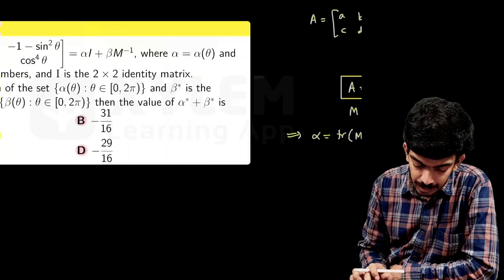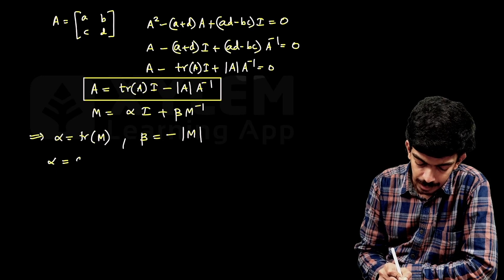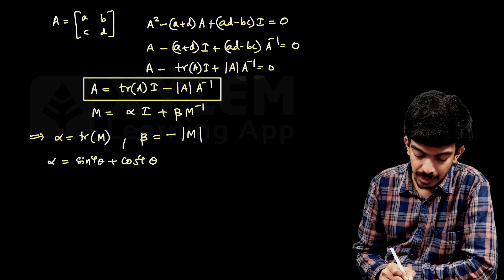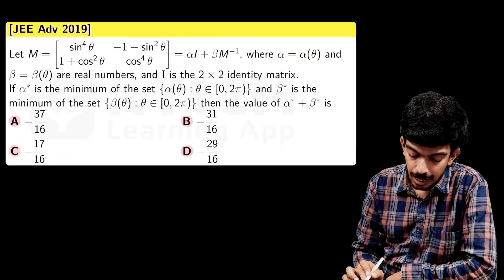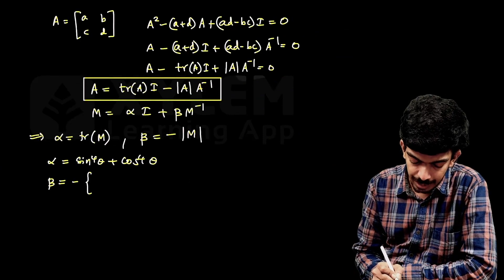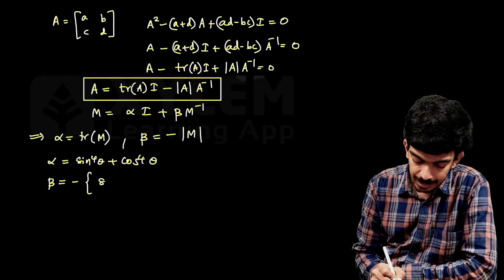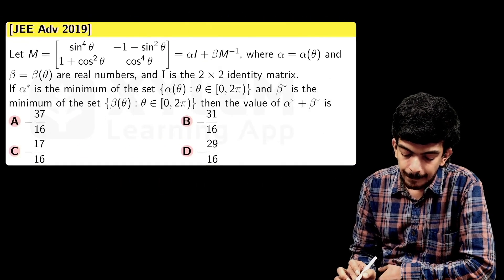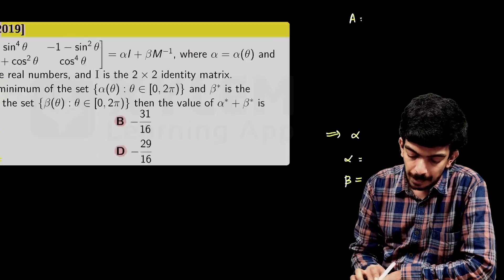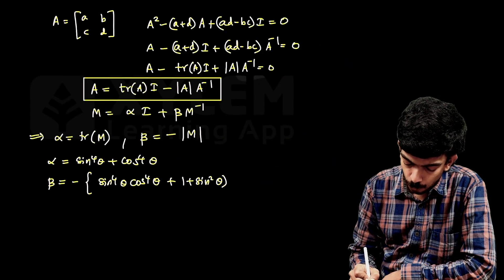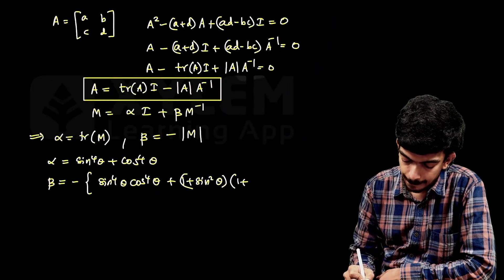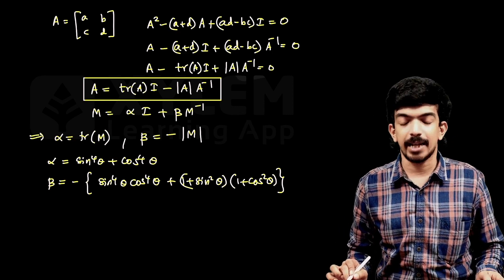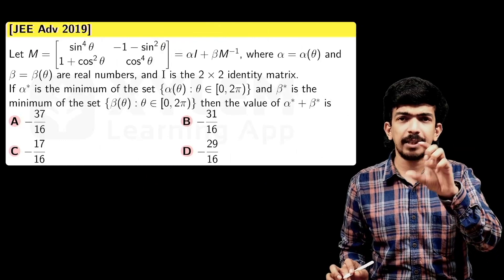So α(θ) = trace of M = sin⁴θ + cos⁴θ. This is a function of θ. For β(θ) = −det(M), we have −[sin⁴θ · cos⁴θ − (−1−sin²θ)(1+cos²θ)], which expands to −[sin⁴θ · cos⁴θ + (1+sin²θ)(1+cos²θ)]. These two functions, α and β, are defined over θ ∈ [0, 2π], giving a full cycle.